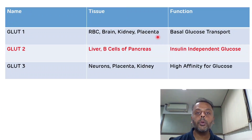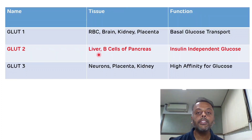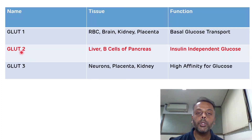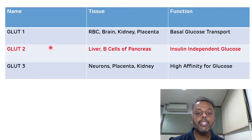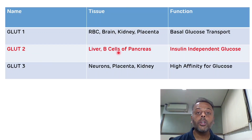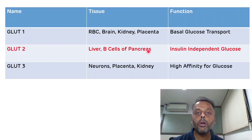The second glucose transporter is GLUT2. Transport of glucose via GLUT2 is insulin independent. It is present in the liver and beta cells of the pancreas. GLUT2 has a high KM and low affinity for glucose. Because it is present in the beta cells and has a high KM value, it can sense high amounts of glucose and release insulin accordingly, playing an important role in blood glucose level regulation.